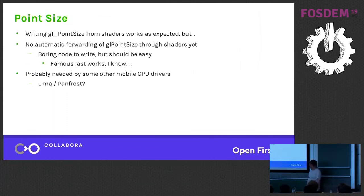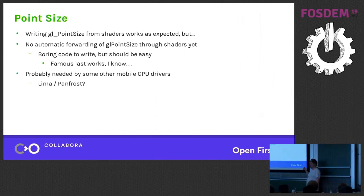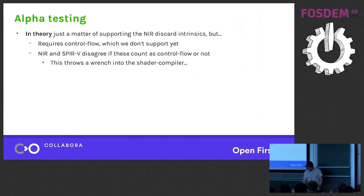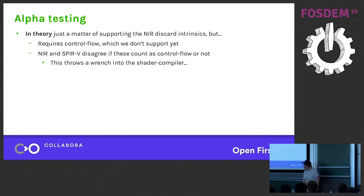Point size is another issue. In OpenGL you can either write the GL point size output in the vertex shader or set a fixed point size for the whole draw call. In Vulkan you can only write it in the vertex shader — we haven't done any forwarding of that state yet. It's kind of boring code to write but relatively easy. Some other drivers working to go upstream will probably need something similar, so maybe we can work on a shared solution. Alpha testing is in theory very simple to implement, but it requires control flow which we don't support — so if we fix the control flow issue, this will go away quickly.